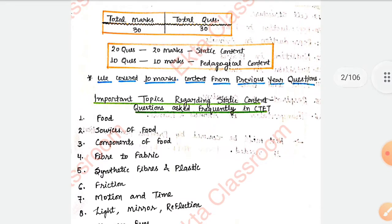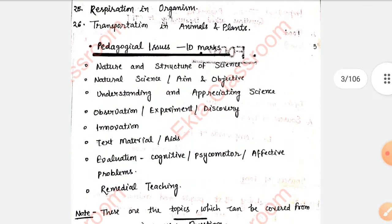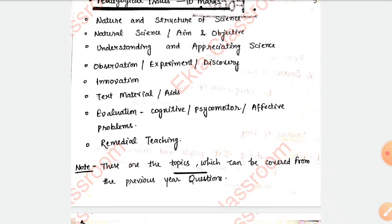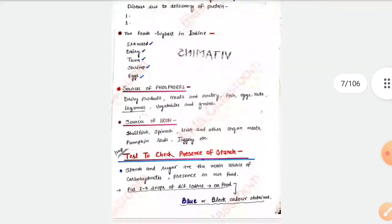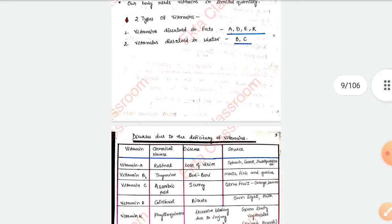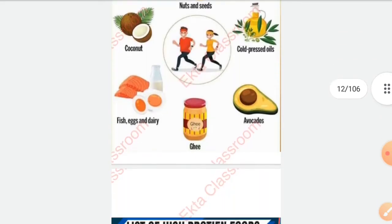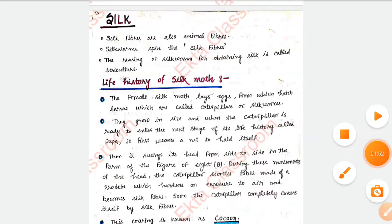Take a look at these notes. You can see every topic related to the CTET previous year and CTET official syllabus. I have covered everything — important topics regarding static content and questions asked frequently in CTET. Ten marks pedagogical questions are asked, and you can cover these topics from previous year questions very easily. This PDF contains 106 pages and you can buy it — I've given the link in the description box and in the comments. You can connect with me and buy this PDF for just 150 rupees, which is a very minimal fee.